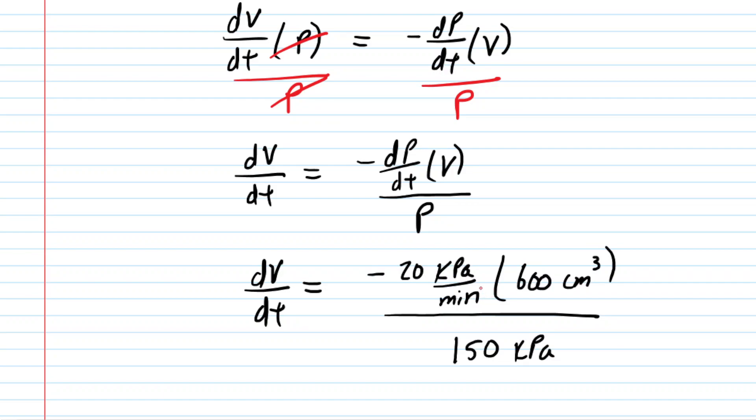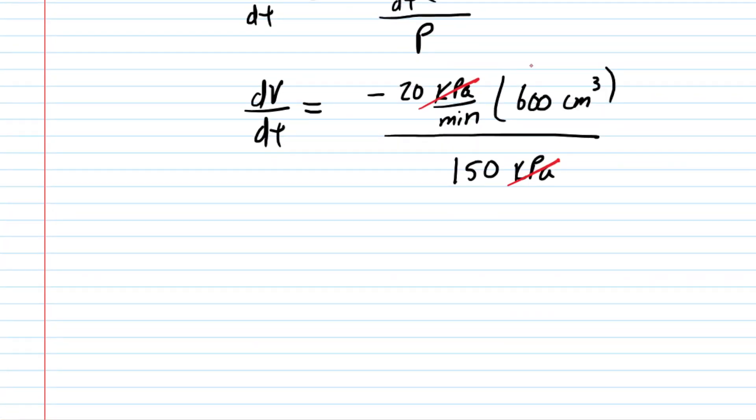And dimensionally when we divide this all out the kilopascals in the numerator will cancel with the kilopascals in the denominator. This is going to leave us with centimeters cubed per minute. And when you compute this you will find that the rate of change in the volume is equal to negative 80 centimeters cubed per minute.